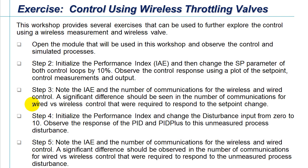In this workshop, we'll initially be looking at the module that we'll be using to simulate both wired and wireless control. We will then initialize our performance index that we'll be using to measure control performance, and then introduce a set point change in both wireless and wired control. We'll then examine the integral of absolute error and number of communications for both wired and wireless control and compare those.